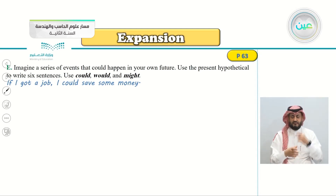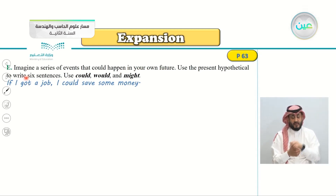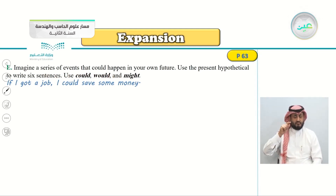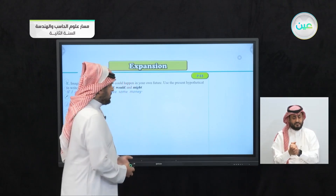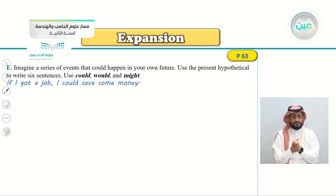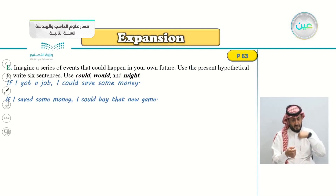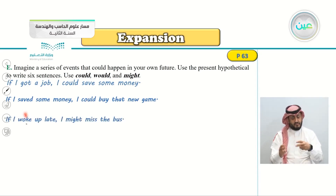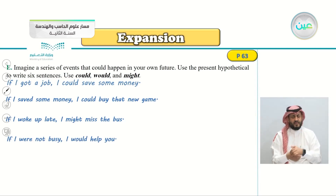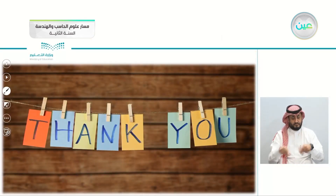Exercise E: imagine a series of events that could happen in your own future. Use the present hypothetical to write six sentences using could, would, and might. For example: 'If I got a job, I could save money.' 'If I saved money, I could buy that new game.' 'If I woke up late, I might miss the bus.' 'If I were not busy, I would help you.' You can continue with even more than six sentences. And with that, we reach the end of this lesson. See you next lesson, inshallah.